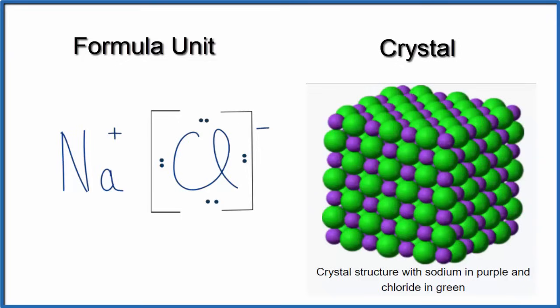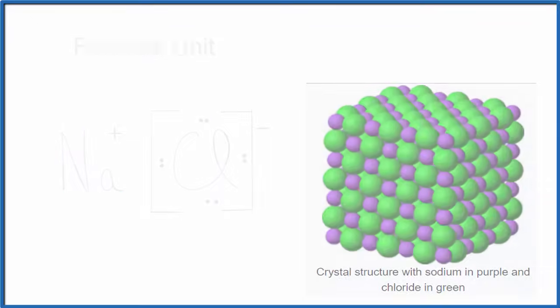You can see the crystal here on the right with its repeating patterns of NaCl. But by writing the Lewis structure for the formula unit, that helps us understand the behavior of those valence electrons.